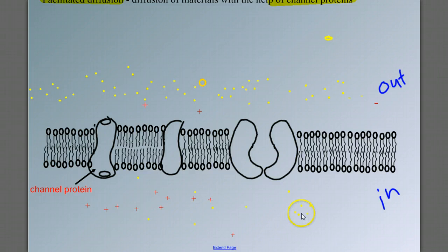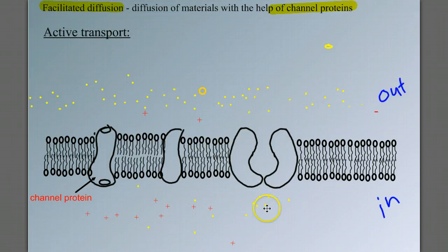What about active transport? Can we move materials against the concentration gradient? For example, can we move these molecules out, even though out is going up the hill or against the concentration gradient? And the answer is we can, but it requires active transport.